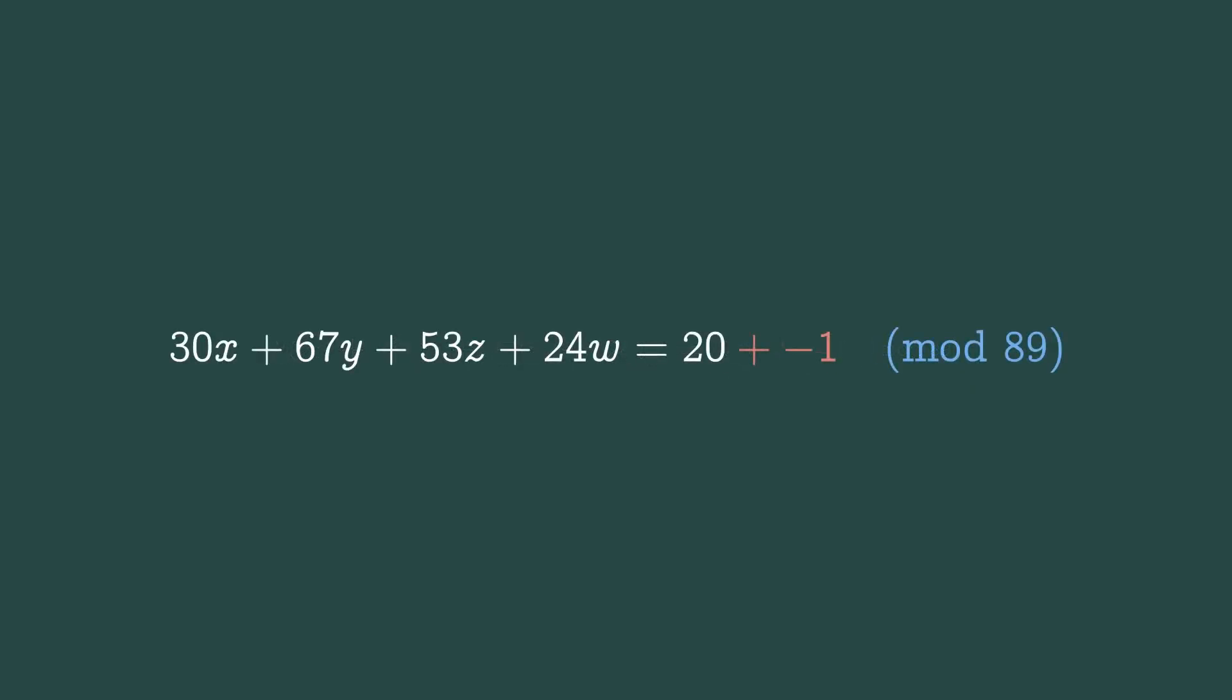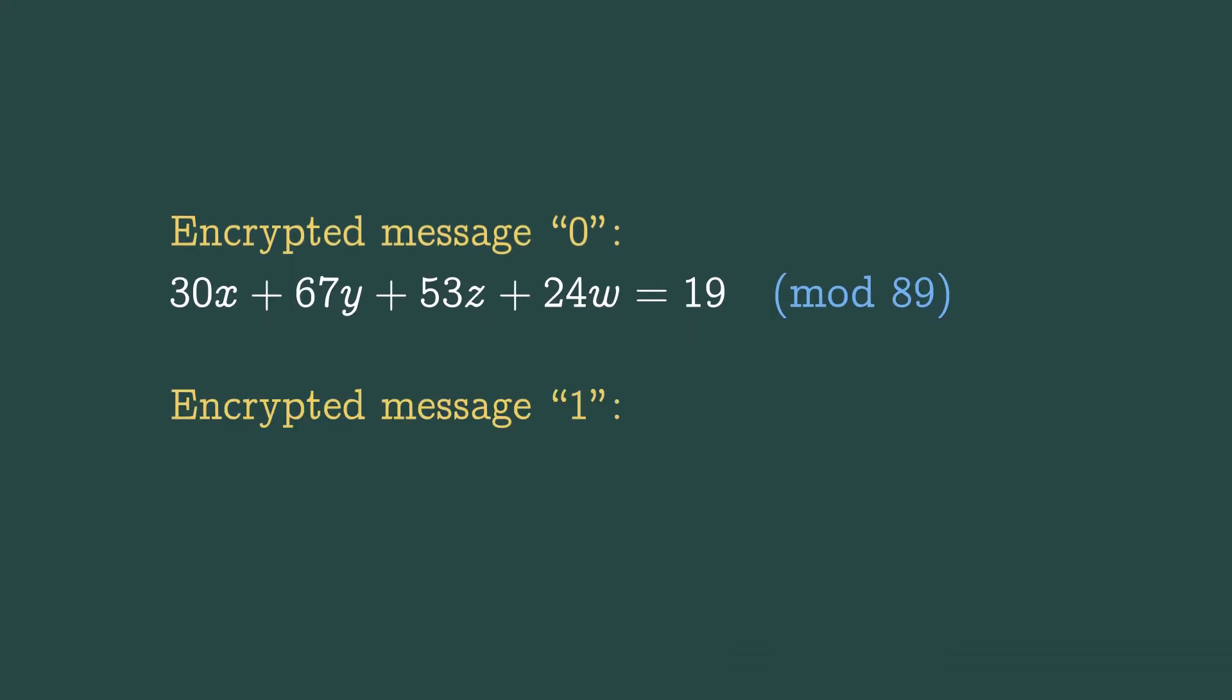Now, if Bob wants to send the encrypted message zero, then he simply sends this final equation, including the errors. Remember, Bob only has the public information, so he can't pull apart the errors. If Bob wants to send the encrypted message one, then he sends the final equation, but he adds 44 to the right hand side. That's half of 89, our modulus rounded down. So to send zero, we add zero, and to send one, we add 44. It's kind of funny to think of an entire equation encoding either zero or one, but that's what's happening here.